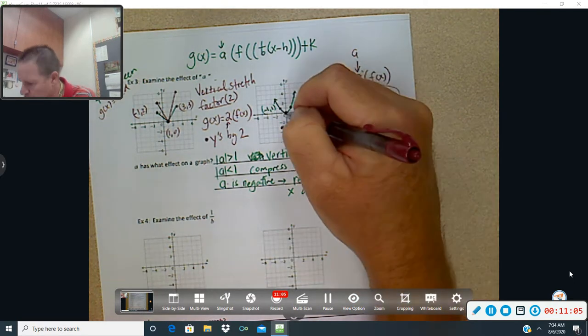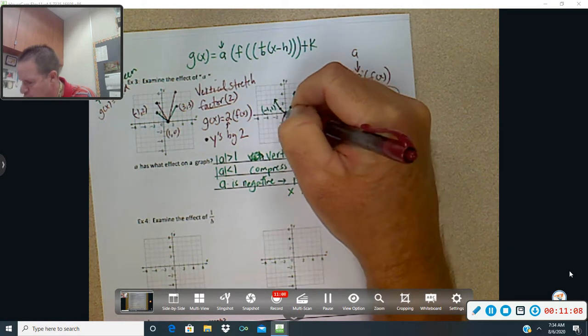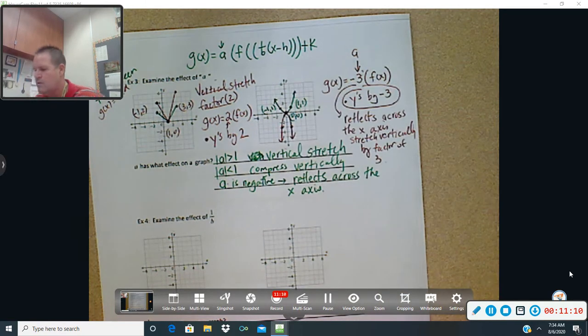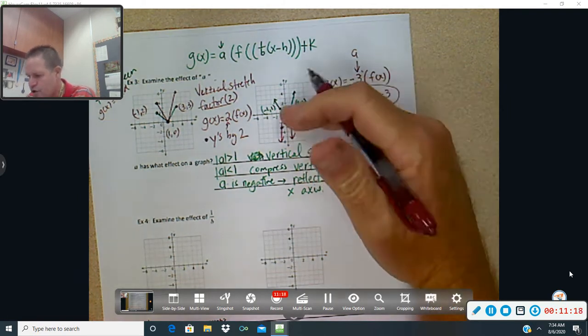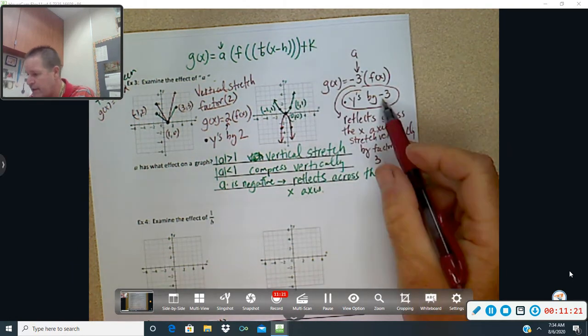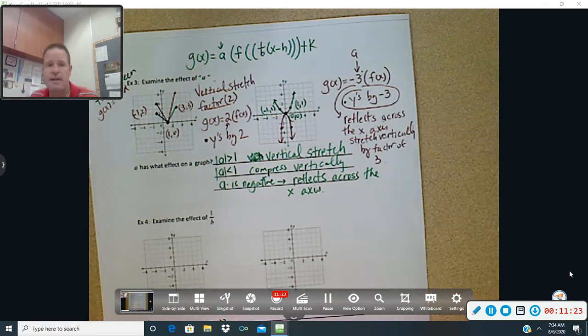And so, now, look at what happened. Again, knowing how to use it, what to do, took care of the situation for us. What did it do? It, again, it stretched us down and flipped us over because of the negative. All right. OK.